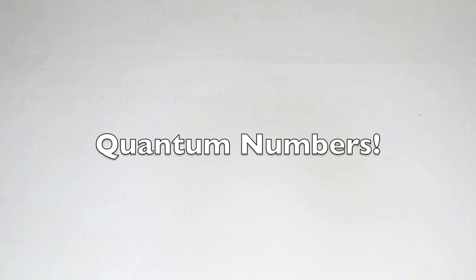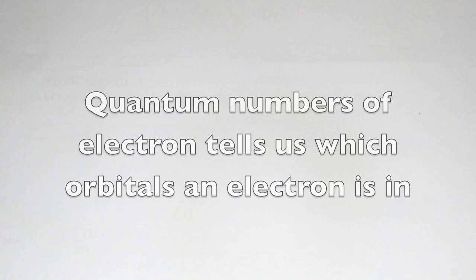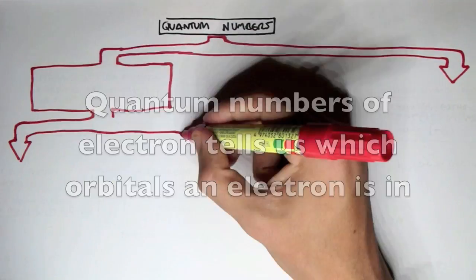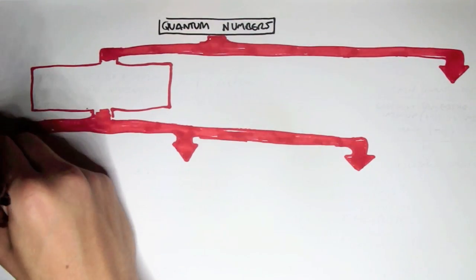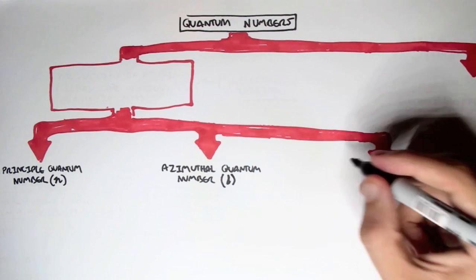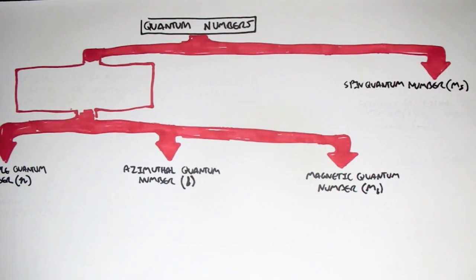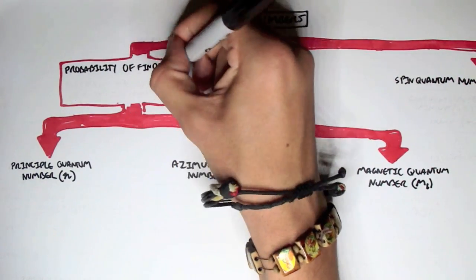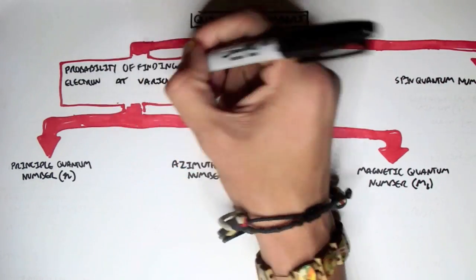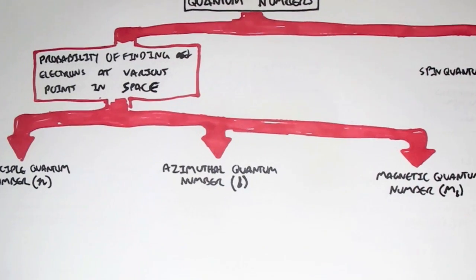Now, each electron has a set of four numbers called quantum numbers. These quantum numbers enable us to label electrons in orbitals. Electrons have four quantum numbers: we have the principal quantum number, designated N; the azimuthal quantum number, L; the magnetic quantum number, M with a small l; and then we have the spin quantum number, M with a small s. The principal, azimuthal, and magnetic quantum numbers help in finding the probability of finding an electron at various positions in space, which is what's called the electron orbitals.